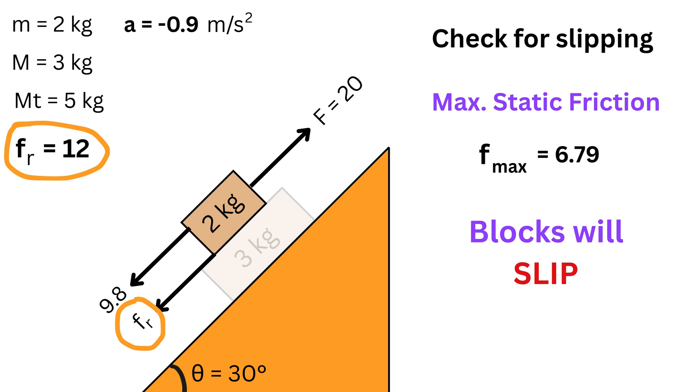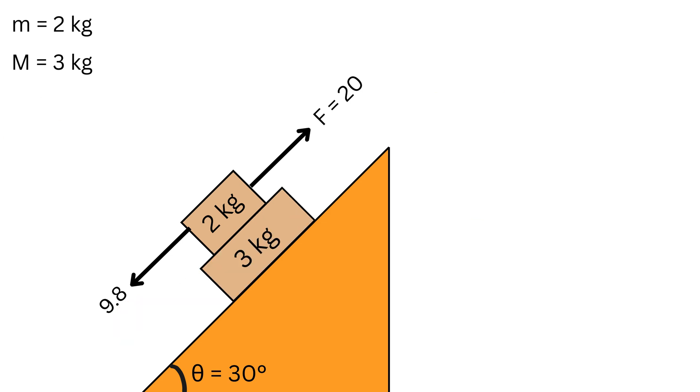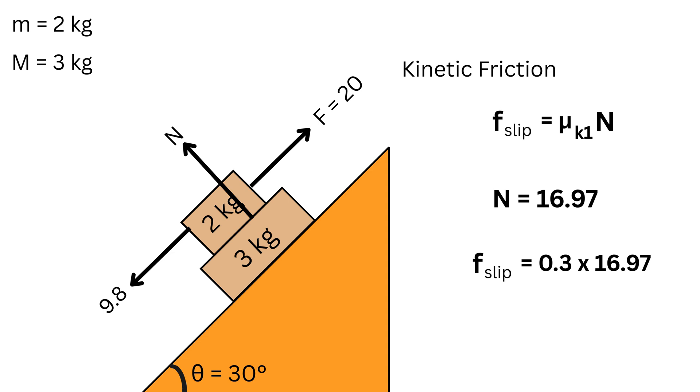So this means they will slip. Therefore, finally, since they slip, we will calculate their individual accelerations. When they slip, the friction force between the blocks is the kinetic friction, the f_slip, which is the same as mu_k1 times this normal force or 0.3 times 16.97 or 5.09 newtons.